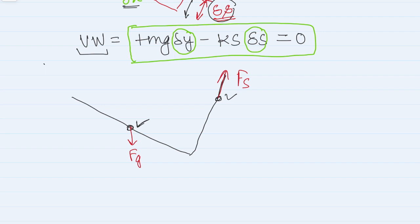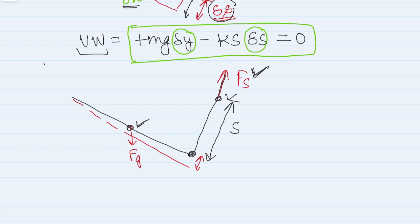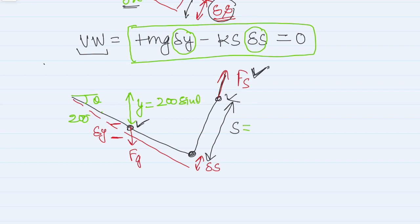I will define the coordinates of these two points with respect to a fixed reference. The center of mass is at the midpoint of the rod, which is 200 mm from A, so y = 200×sinθ. The spring length s was already calculated as s = 0.4√(2(1 − cosθ)). To find the small variations delta y and delta s due to a small perturbation delta theta, I differentiate these expressions with respect to theta.